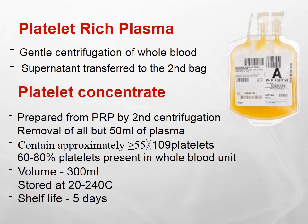Platelet Rich Plasma (PRP) is obtained by gentle centrifugation of whole blood, which is then transferred to a second bag. The concentration of platelets is prepared from PRP by a second centrifugation and removal of all but 50 ml of plasma. It contains more than 5 to 7 × 10¹⁰ platelets, and 60 to 80 percent of the platelets from the whole blood unit are present. It is stored at 20 to 24 degrees centigrade and the shelf life of PRP is five days.